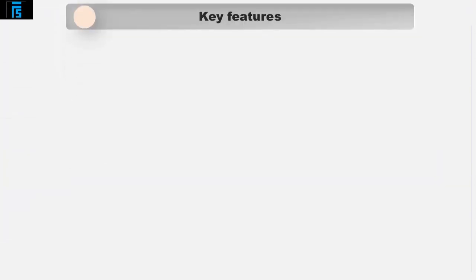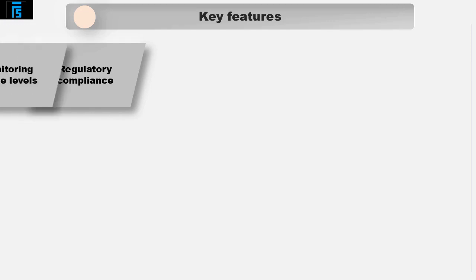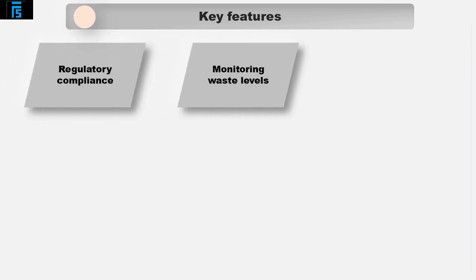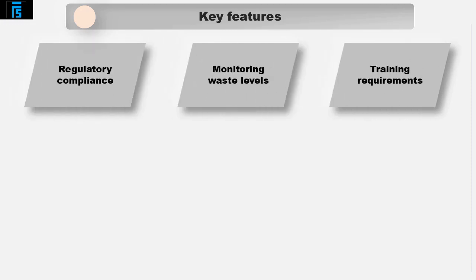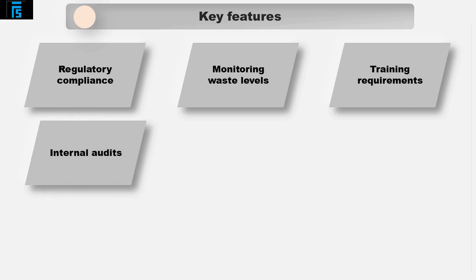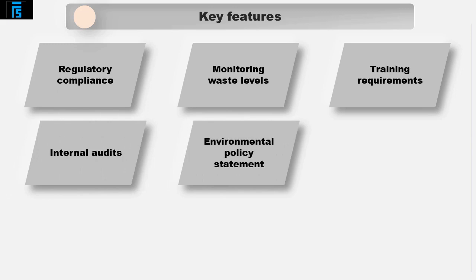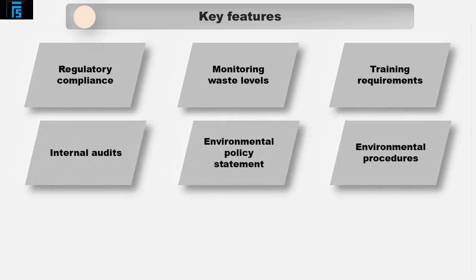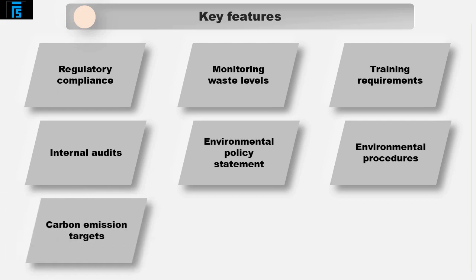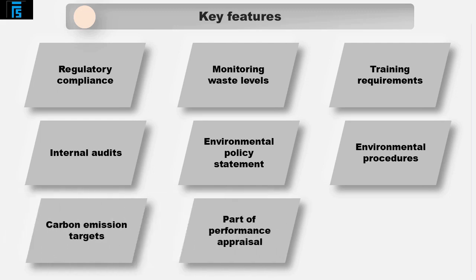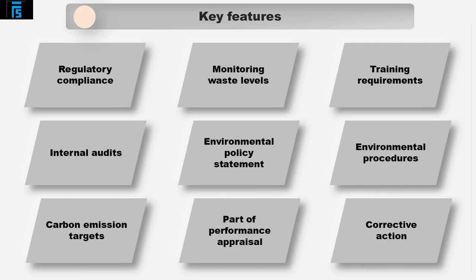Key features of a company's environmental management accounting system might include: ensuring regulatory compliance by monitoring waste levels, ensuring staff receive standard training, and carrying out internal audits. The company should have an online environmental policy statement, and the public relations department might have a defined set of environmental procedures. Realistic targets should be set to reduce carbon emissions and related environmental costs, forming part of a larger performance appraisal process. Budgeted environmental cost reduction targets should be compared to actual results, and if targets are not met, corrective action should be considered.